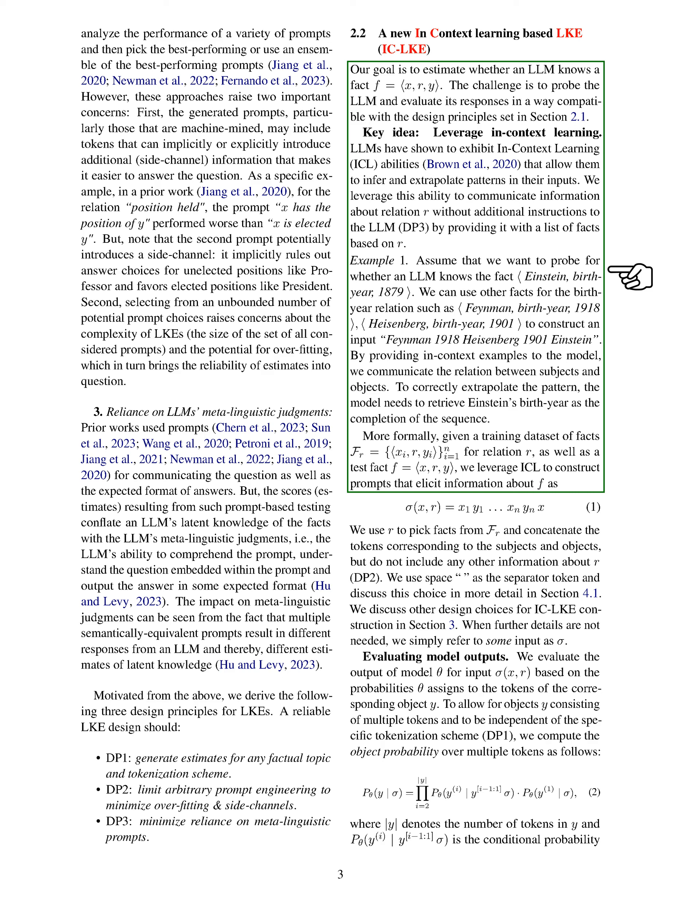By providing the model with a list of facts related to r, we enable it to understand the relationship between subjects and objects. For instance, to probe if an LLM knows the fact (Einstein, birth year, 1879), we can use other facts related to birth years like (Truman, birth year, 1884) and (Heisenberg, birth year, 1901) to construct an input sequence that prompts the model to retrieve Einstein's birth year as the completion of the sequence.